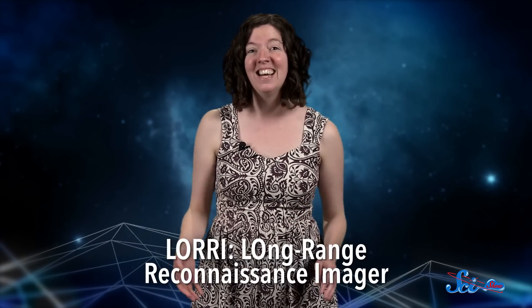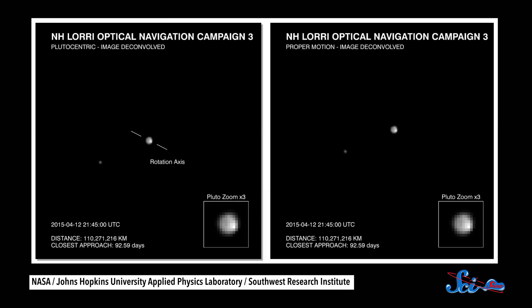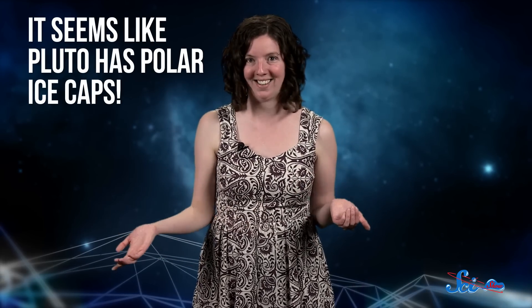The photos still aren't easy to make out, but astronomers have spotted bright and dark patches on Pluto's surface, including an especially bright spot covering one of its poles. So let this be the first of New Horizons' possible discoveries. It seems like Pluto has polar ice caps.